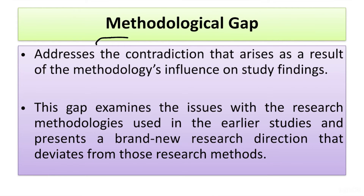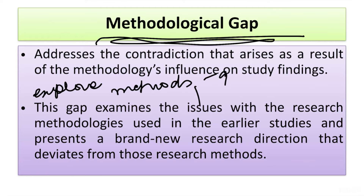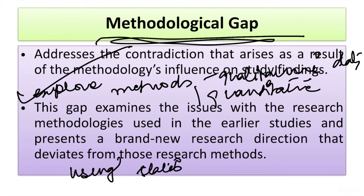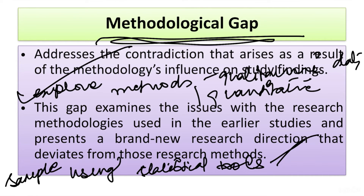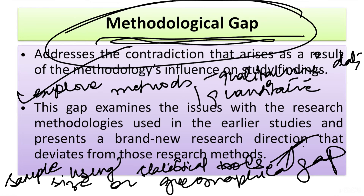The next type of gap is the methodological gap. Here you try to explore new methods. For example, earlier studies were done on the basis of qualitative data — now you can compare with quantitative data. You can also change the methodology, use different statistical tools, change the sample size, or change the geographical area. The methodological gap is the widest kind of gap you can use in any research.